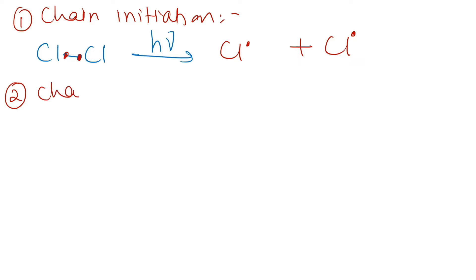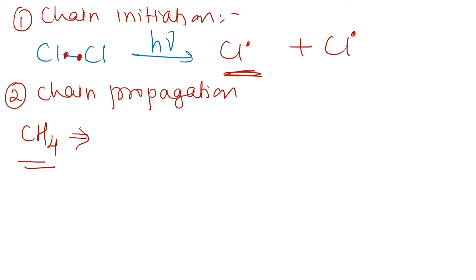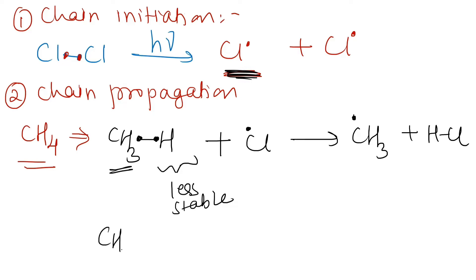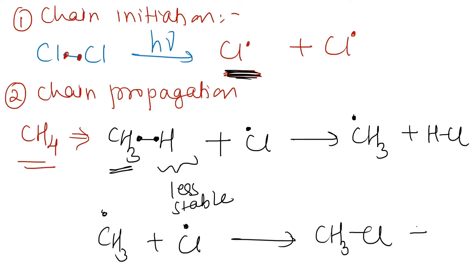In chain propagation, taking methane (CH₃–H) as an example, the chlorine radical first reacts with the H of methane, forming the byproduct HCl. The H radical is less stable compared to the CH₃ radical. Then the CH₃ radical forms a bond with another Cl radical present in the vicinity, forming methyl chloride (CH₃Cl).